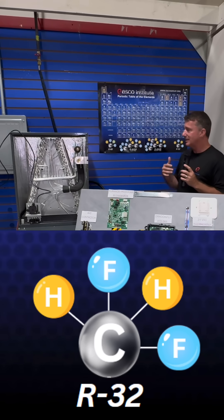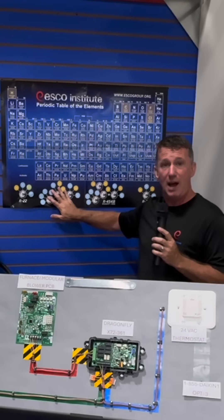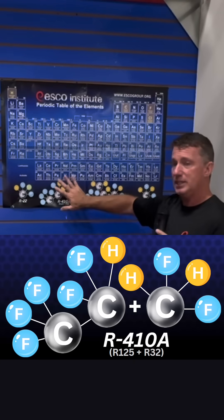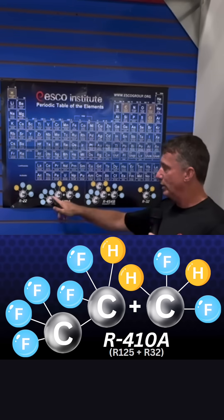we weren't ready for that in the United States. So we blended R32 with R125 to create what we know as R410A. It was a non-flammable refrigerant, but it was a blend of that 32 and 125.